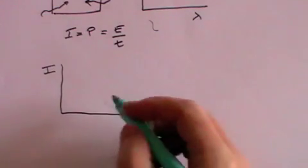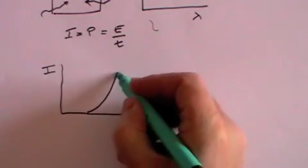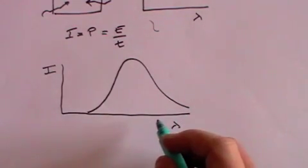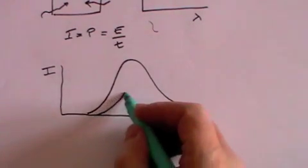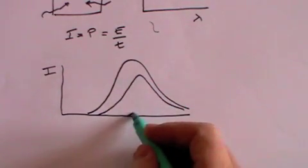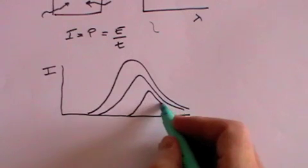Experimentally however it had been found that if you plotted the intensity of the radiation that you got against the wavelength you got a graph that looked a bit like this. This would be for a very high temperature. If the temperature were lower it would look like this, and if the temperature were lower still it would look like this.